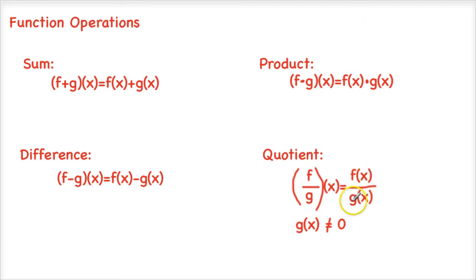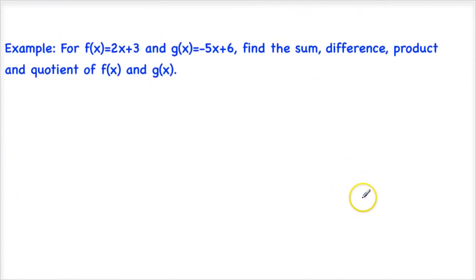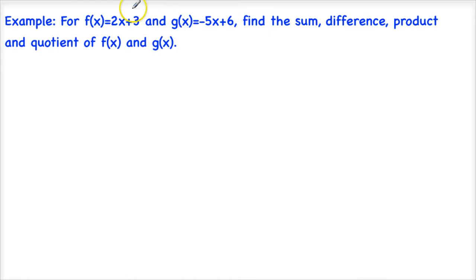For the quotient, f over g of x equals f of x over g of x. We're not going to simplify much beyond that, besides stating what values x cannot be. g of x cannot equal zero — that goes back to our discussion about domains where we don't want zero in the denominator, because that would make this undefined. So let's do an example: find the sum, difference, product, and quotient where f of x equals 2x plus 3 and g of x equals negative 5x plus 6.